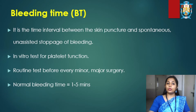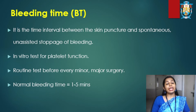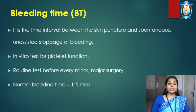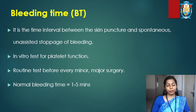Today we are going to perform bleeding time. Bleeding time is the time interval between the skin puncture and spontaneous, unassisted stoppage of bleeding. This test is performed in vitro for platelet function and is used as a routine test before any minor or major surgery. In a normal healthy person, bleeding time should be within one to five minutes.